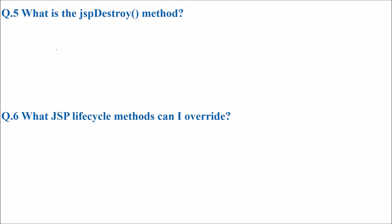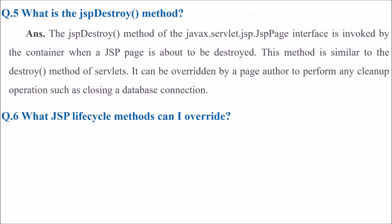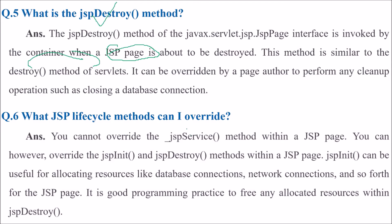What is JSP destroy? You will find it in javax.Servlet.JSP. This JSP page interface is invoked by the container when a JSP page is about to be destroyed. This method is similar to the destroy method found in the counterpart servlet. It can be overwritten by the page author to perform any cleanup operations — such as closing database connections. JSP init is useful for allocating resources like database connections and network connections, and good programming practice is to free any allocated resources within JSP destroy.